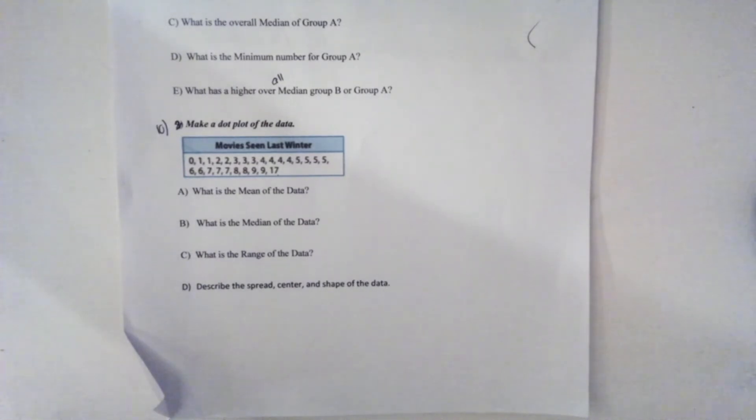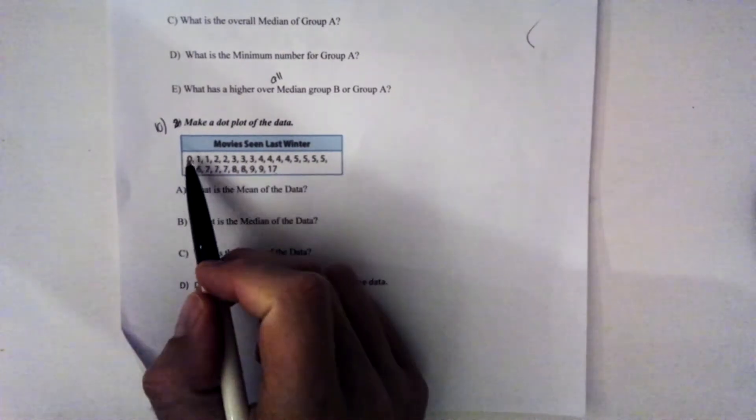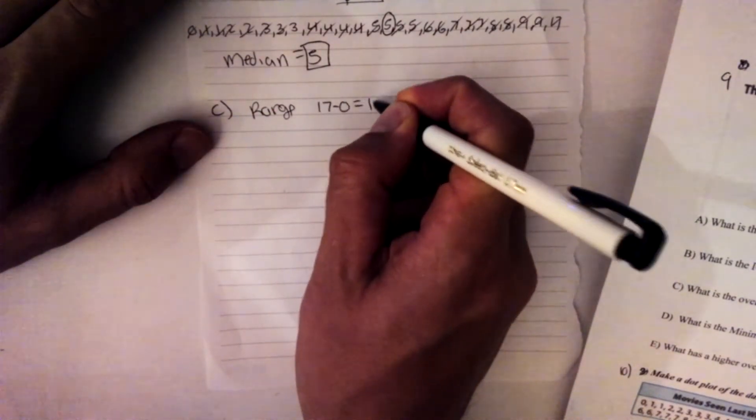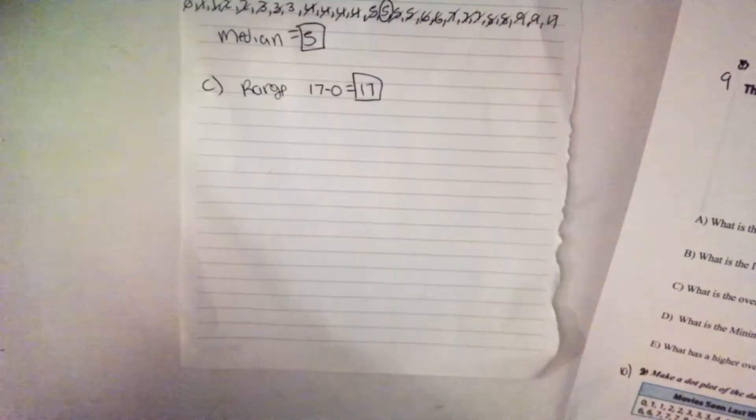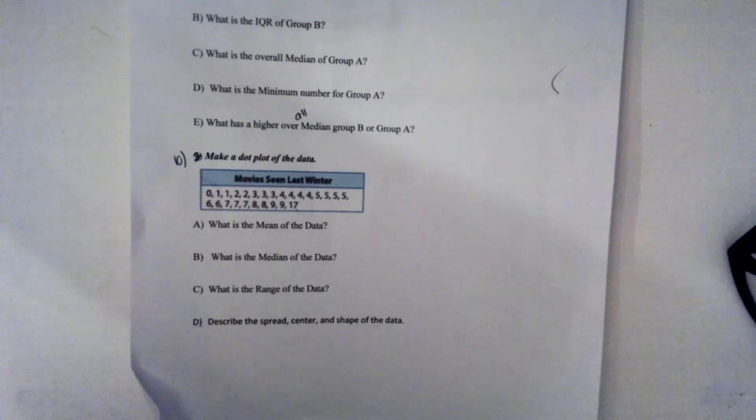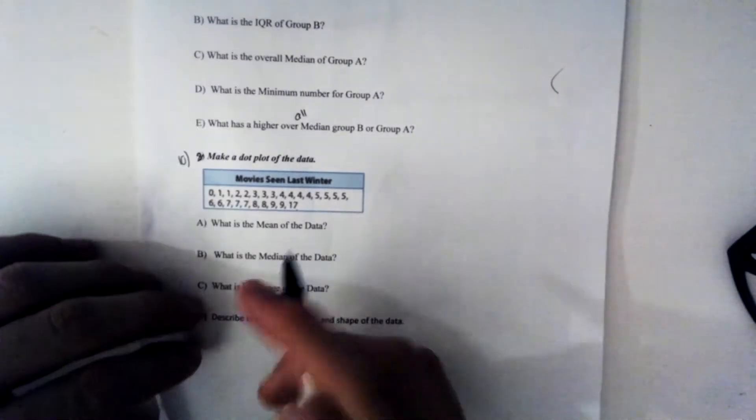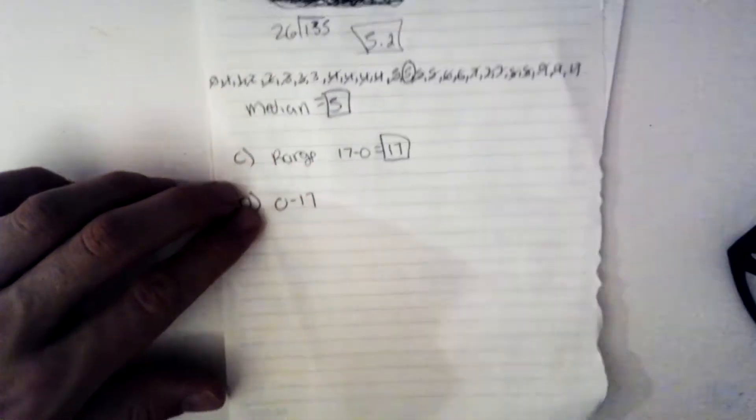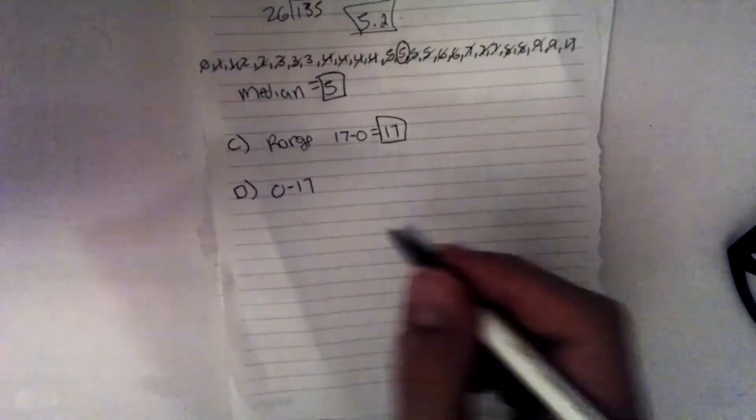Let's look at the range of the data here. To find the range, you just have to do the biggest minus the smallest. So our range for number 10 is going to be 17 minus 0, which is equal to 17. 10 asks you to find, for D, describe the spread, center, and shape of the data. So the spread is going to be when you have the smallest to the biggest numbers. So the spread is from 0 to 17.